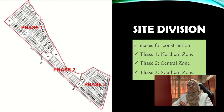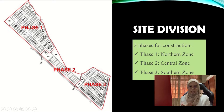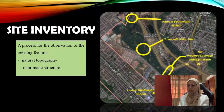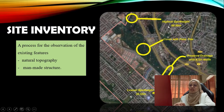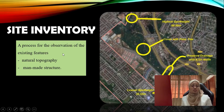As you can see in this picture, this is the site division of the proposed site for our project. The earthworks department divided the proposal into three phases or sections: the northern zone, the central zone, and the southern zone. The site inventory is a process for the observation of existing features that include natural topography and also man-made structures.